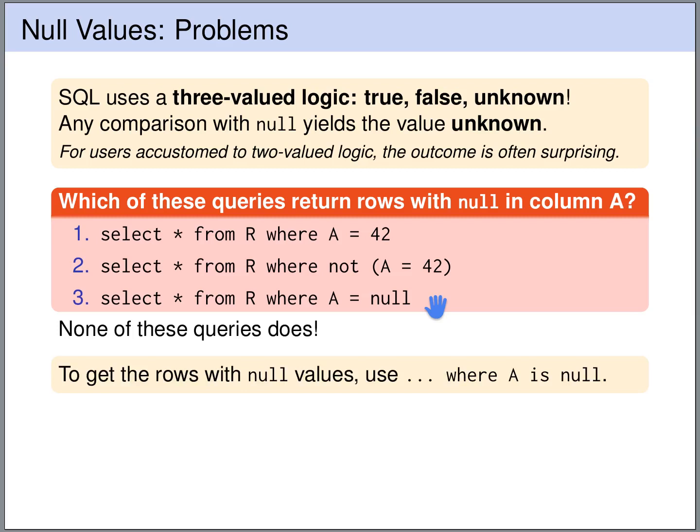If we want to have the rows where A is NULL, we have to use a different syntax. We have to explicitly say we want the rows where A is NULL.